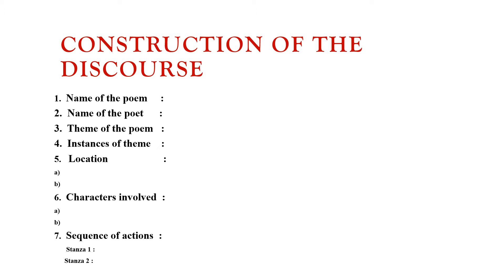Fourth, location. Every poem is set in some or the other location. We need to identify the location or locations in each of the stanzas and write it down. In most poems we find a single location, whereas we may find different locations in different stanzas. If it is a single location, write that particular location. And if we have different locations, we need to identify those locations and number them according to the stanza.